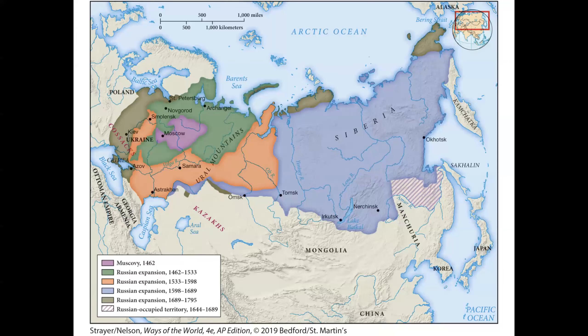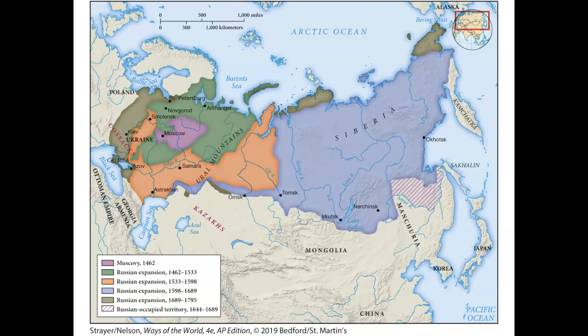This map shows Russian expansion. When we think about transformation within empires, we really look at Western Europe, but other groups are expanding as well. We see Moscow in purple, and then date by date how Russia expands. From 1462 to 1533 we see the green area where Russia expands, and then even further until 1598.